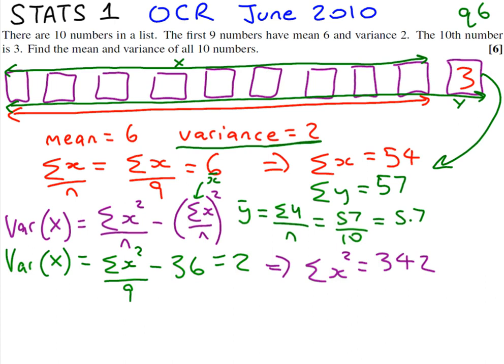Now, we don't want the sum of x squared; we want the sum of y squared to be able to use our formula. The new number we've added on is 3, so we add on 3 squared, which is 9, to get the sum of y squared equal to 351.